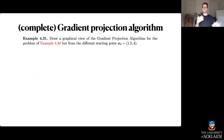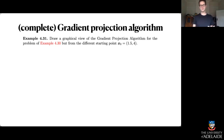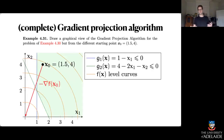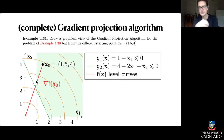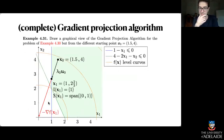Same thing again, but if we try a slightly different starting point — if we start at (1.5, 4) rather than (2, 4). If we understand the gradient projection algorithm well enough, we should be able to figure out what the algorithm is going to do without actually needing to do the mathematics. If you draw a good enough picture, you can trace through in your mind. Taking a steepest descent direction from this different starting point, I now hit the blue constraint.